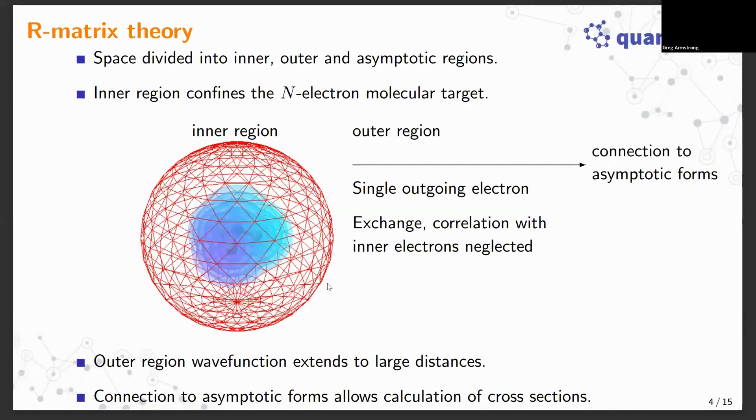Just a brief overview of R-matrix theory. The R-matrix method divides space into several regions: inner, outer and asymptotic. The inner region is there to confine the electron target molecule. I've depicted it here with this red sphere which is the inner region, the target molecule encapsulated within it, and the electron impact process occurs. The outer region is a region in which a single electron is assumed to be outgoing following the collision.